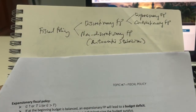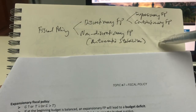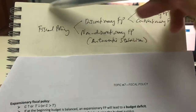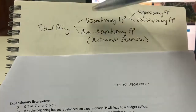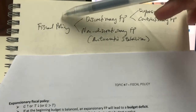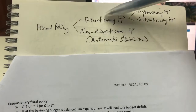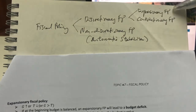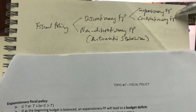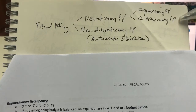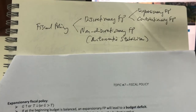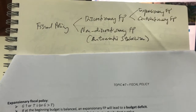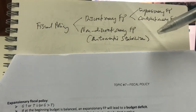Recall this breakdown from earlier when we first started this topic. There are generally two categories or two types of fiscal policy: the discretionary fiscal policy, which includes both the expansionary fiscal policy and contractionary fiscal policy, and the second type is the non-discretionary fiscal policy, or the automatic stabilizer.